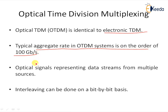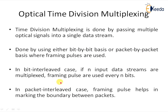Optical signals representing data streams from multiple sources are interleaved in time to produce a single data stream. The interleaving can be done on a bit-by-bit basis or on a packet-by-packet basis. TDM is done by combining multiple optical signals into a single data stream, always done bit by bit or packet by packet.